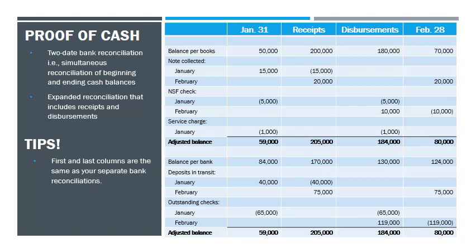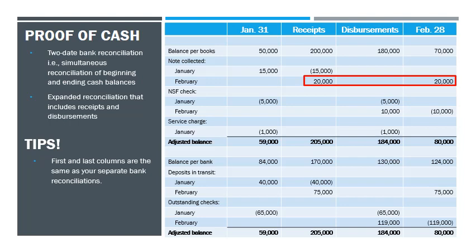The bank collected a note in January amounting to $15,000, but the entity was not able to record it as a cash receipt in January — it only entered the books in February when it should have been recorded in January. So we add the $15,000 to the January balance per books to arrive at the adjusted cash balance in January and deduct the same from the February cash receipts. The bank collected another note in February amounting to $20,000, which the entity has not yet recorded as a cash receipt. So we add the $20,000 to the February cash receipts and to the February balance per books to arrive at the adjusted cash balance in February. The rest of the proof of cash follows the same logic. A tip for checking correctness: similar amounts that are side by side have different signs, and similar amounts that are apart have similar signs — like opposites attract.